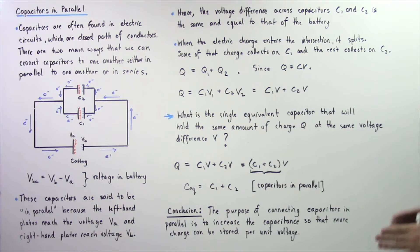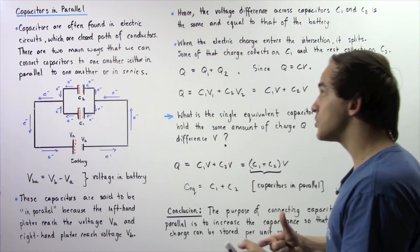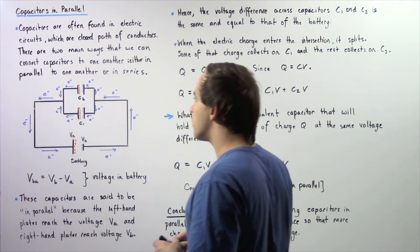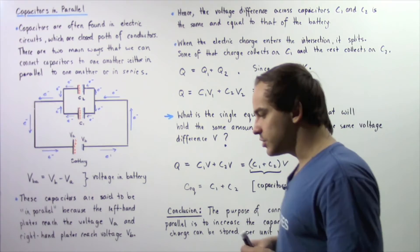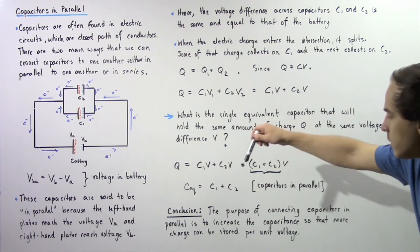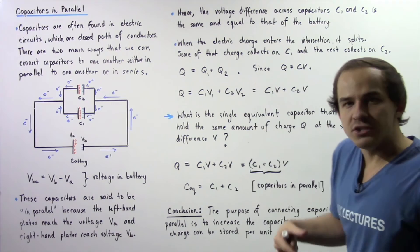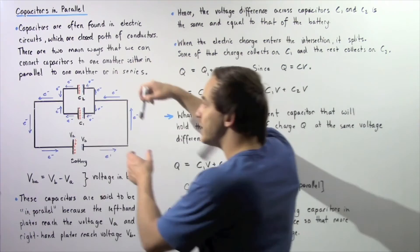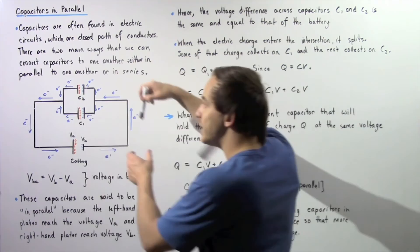C_equivalent equals C1 plus C2. Generally speaking, whenever we place 2, 3, 4, 5, or more capacitors in parallel, to find the equivalent capacitance we simply sum up the capacitances of all capacitors placed in parallel. The purpose of connecting capacitors in parallel is to increase the total capacitance so that more charge can be stored per unit voltage. As we increase the number of capacitors in parallel, we increase the area on which electric charge can accumulate — the more area, the more charge can be stored.